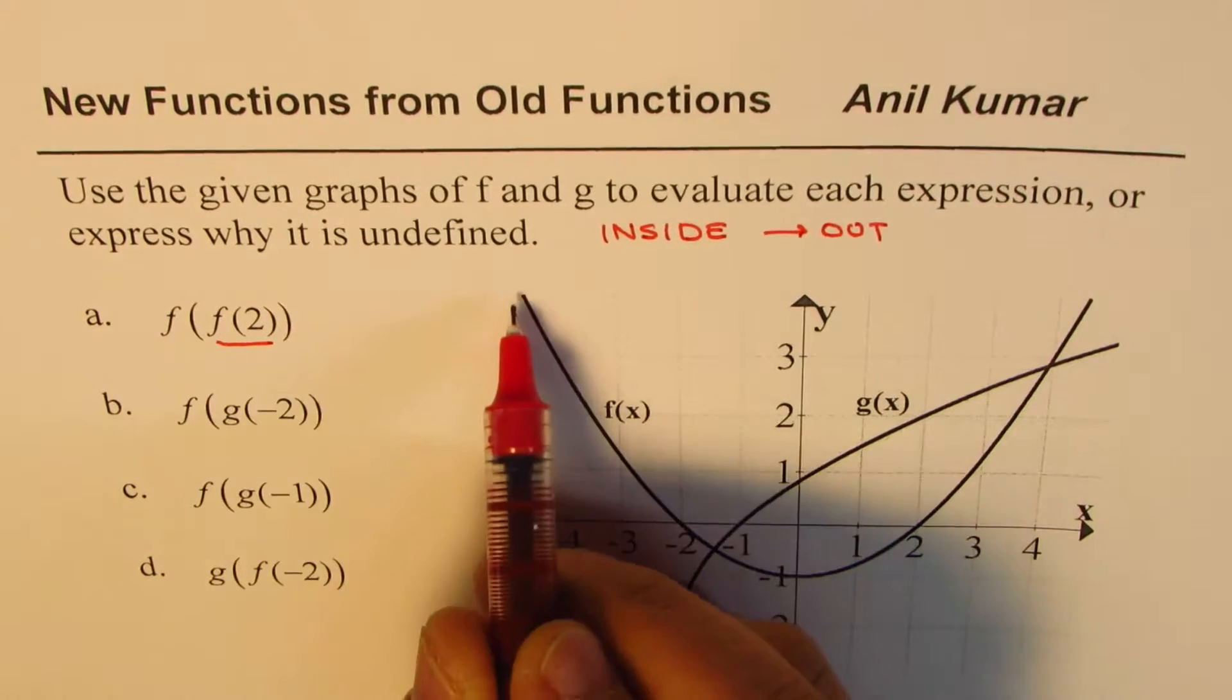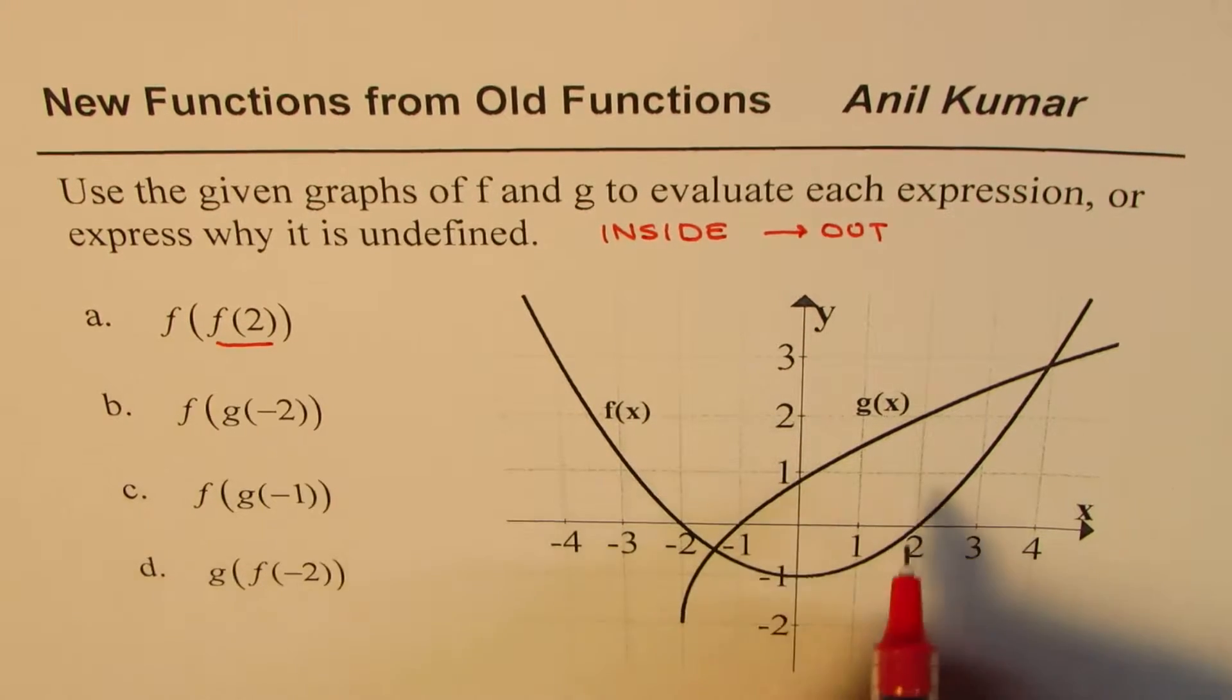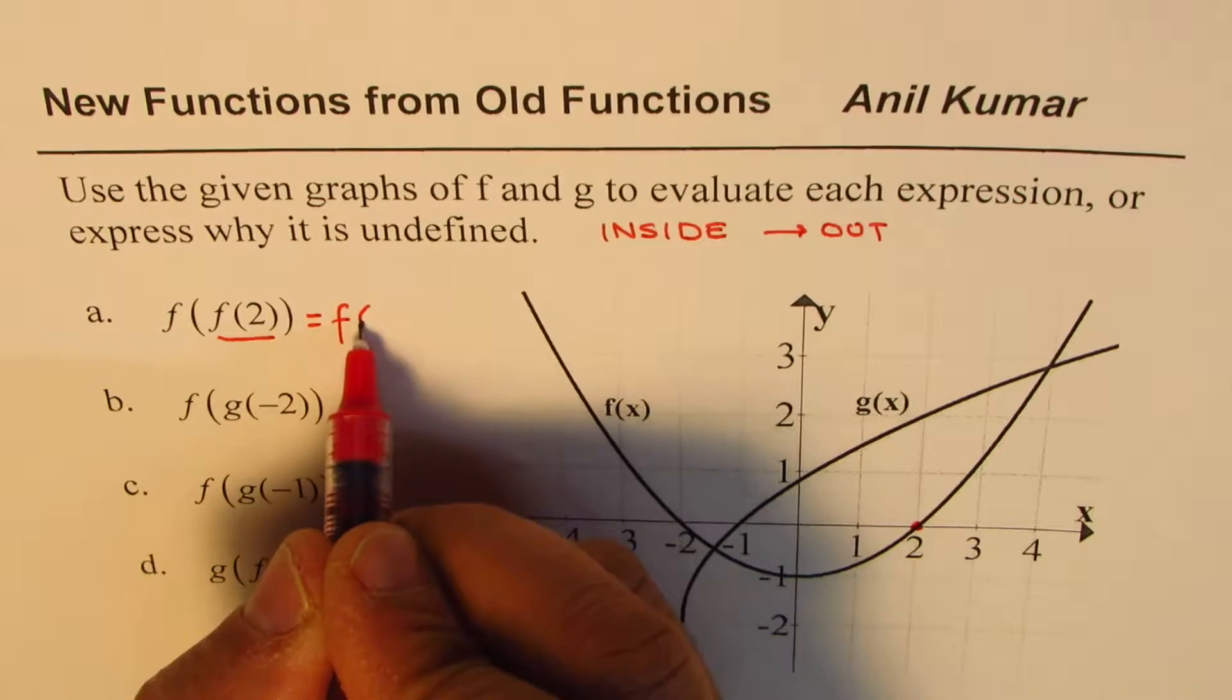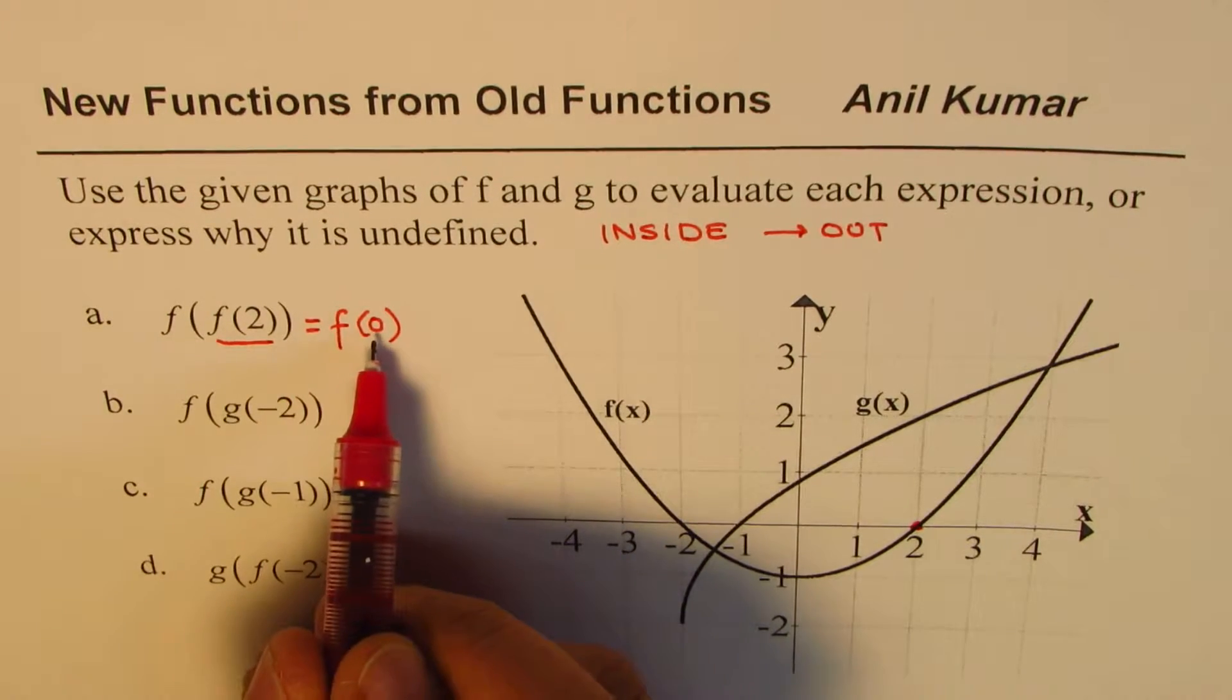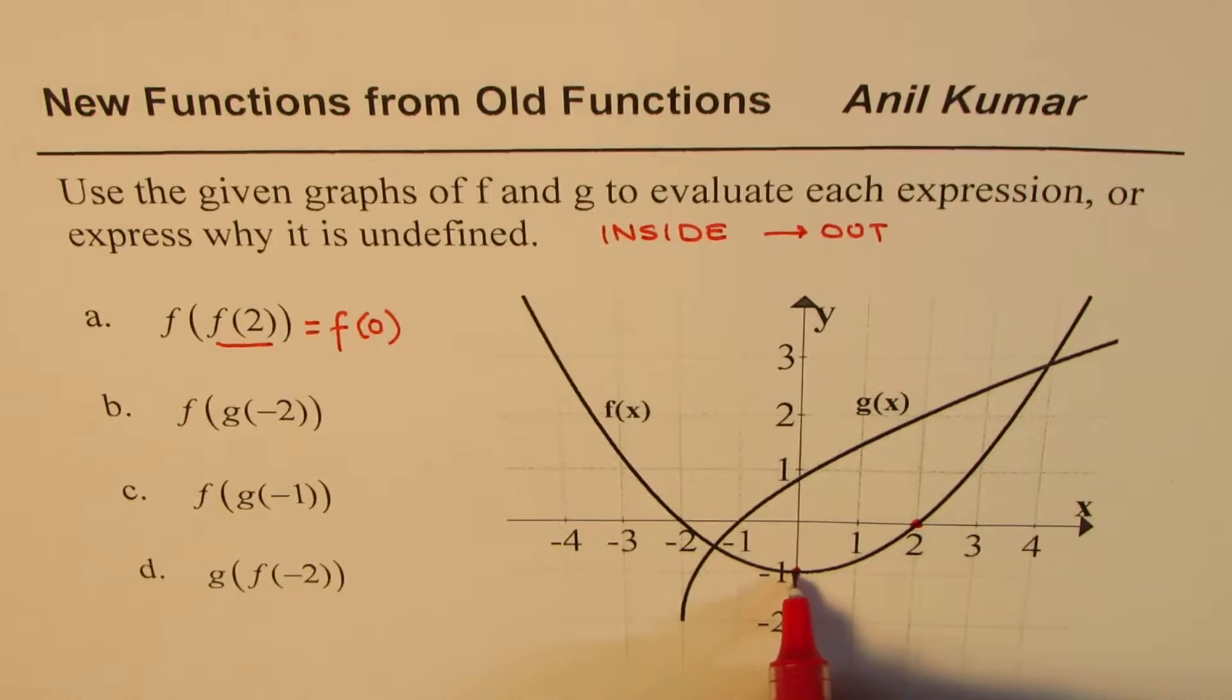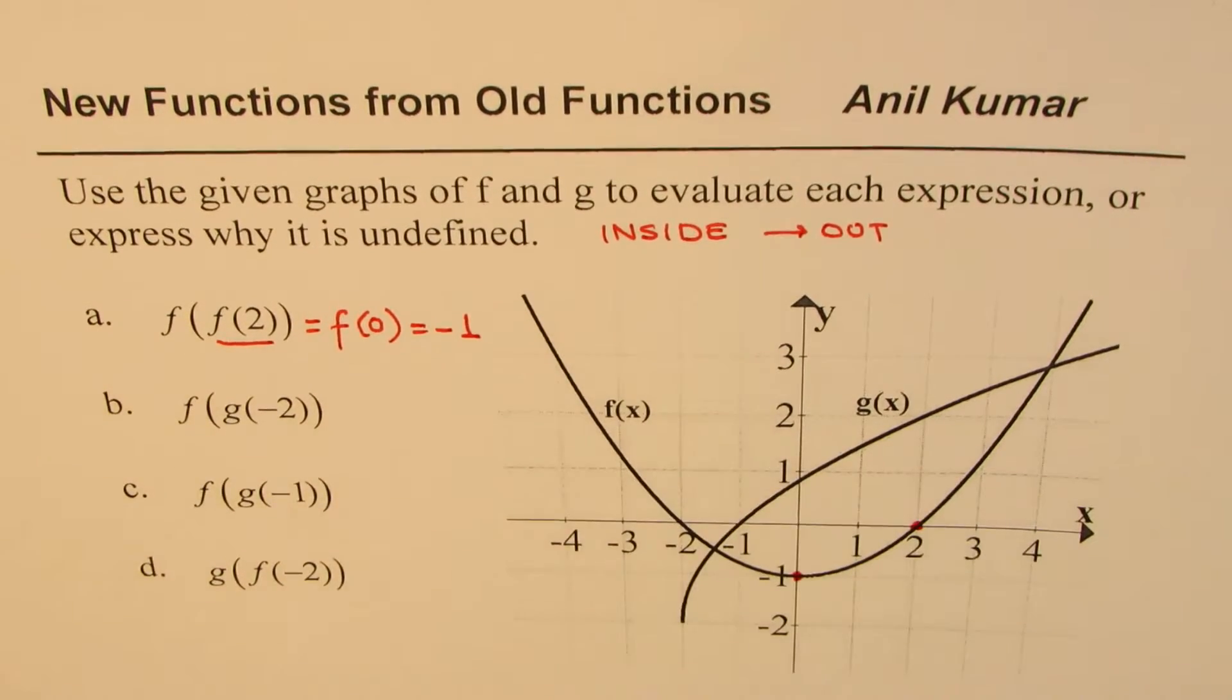So that means this parabola which represents f(x), the output of this parabola when x is 2. When x is 2 it is this point, which is 0. So this equals f(0). Now you need to find what is f(0). So f(x) is the parabola. At 0 the value here is -1.